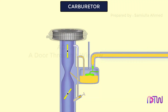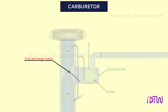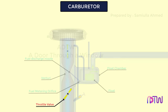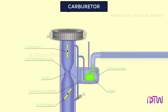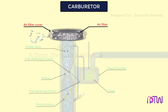A simple carburetor mainly consists of the following: float chamber, fuel discharge nozzle, metering orifice, venturi, throttle valve, and choke valve. Before the venturi there is a filter which filters out all incoming impurities coming with air into the carburetor.